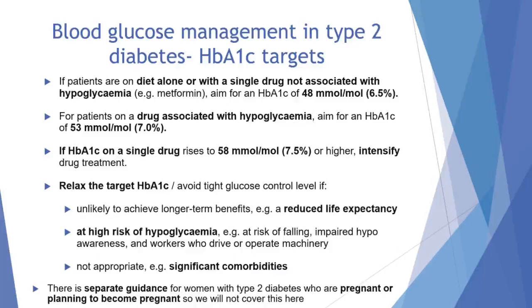We also need to consider relaxing the target HbA1c level for patients who are unlikely to achieve longer-term risk reduction benefits, for example people with a reduced life expectancy, or for whom tight blood glucose control poses a high risk of hypoglycaemia consequences — such as people at risk of falling, those with impaired awareness of hypoglycaemia, or people who drive or operate machinery as part of their job. There is separate guidance for women with type 2 diabetes who are pregnant or planning to become pregnant, which will not be covered here.